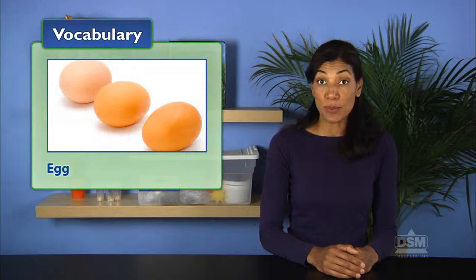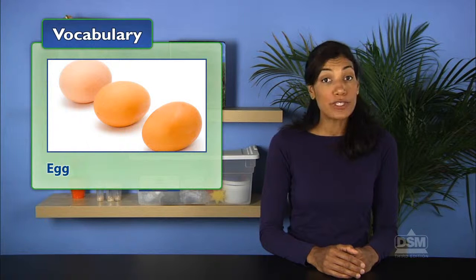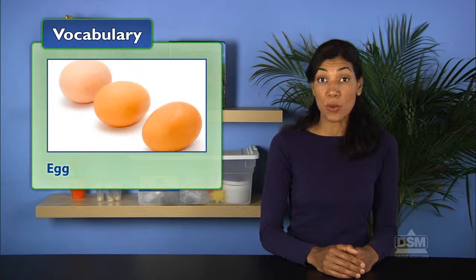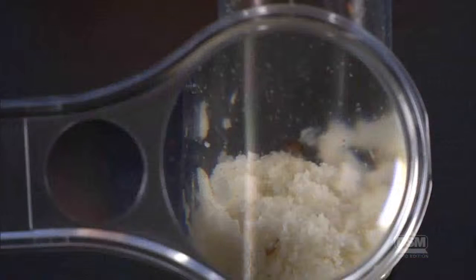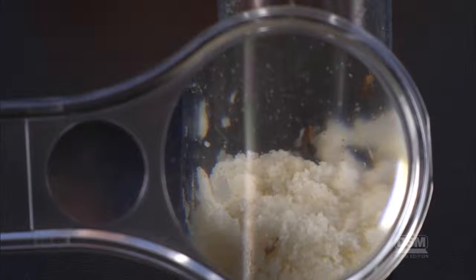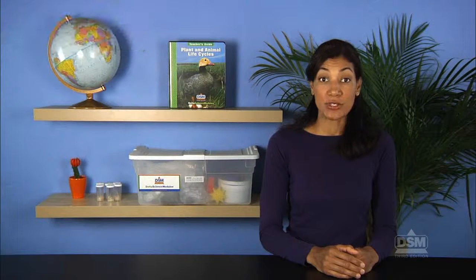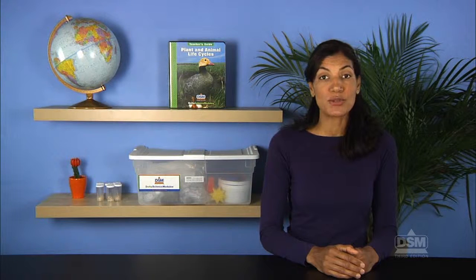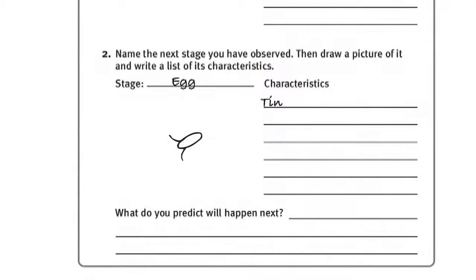Inform students that an egg is the female reproductive cell and the first stage in the life cycle of some organisms. Explain that the female fruit flies have laid eggs on the surface of the food in order to reproduce. If any fruit fly eggs are visible in the vials, point them out. Distribute a fruit fly egg picture to each team and instruct students to complete Question 2 of Activity Sheet 5, Part A.